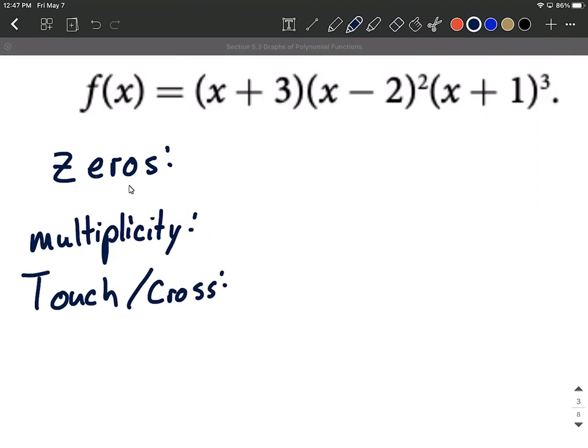All right, next up, let's pick out these zeros. So what we can do is look factor by factor and kind of think to ourselves, if this factor, x plus 3, we want to make that equal to zero, what we could do is just kind of visualize what would I need to plug in for this x to make this factor equal zero.